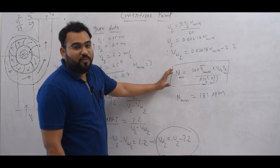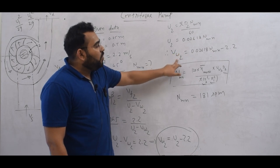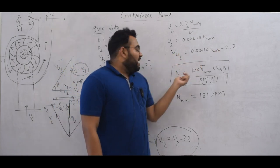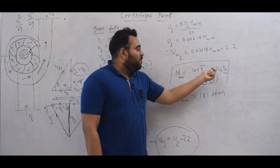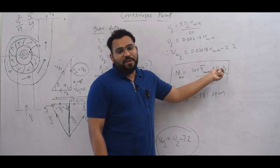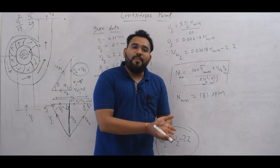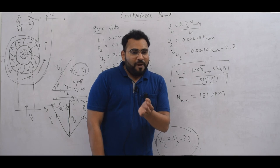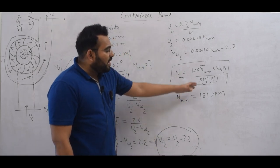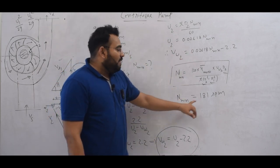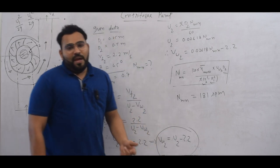You have to convert VW2 in terms of N minimum. So U2 value is in terms of N minimum. Left hand side N minimum, right hand side will become N minimum, then you solve it. The answer will come. It is a very easy example. All the values we had, so N minimum answer is 181 RPM.